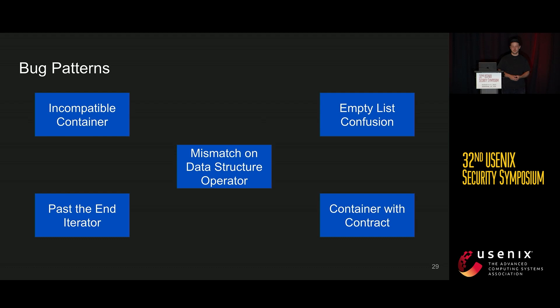Based on our dynamic analysis, we found five different bug patterns. In this case study we saw the empty list confusion. I'll talk about the past-the-end iterator next, and for the other three I refer you to the paper.